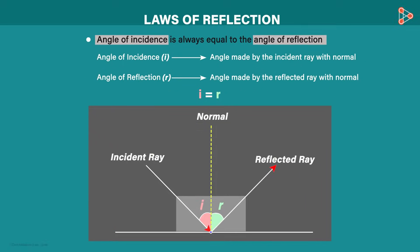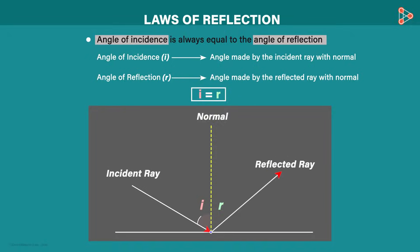Here as I is equal to R, if the incident ray strikes at this point, then the reflected ray will travel along this direction only so as to keep the measure of R same as I. If I move the incident ray here, then the reflected ray will also move to keep the measure of R.